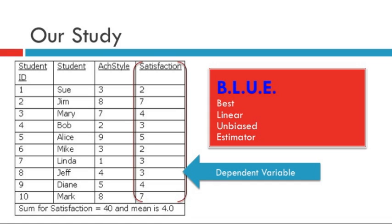So here's my little study. We only have 10 subjects. We'll actually use their names. The dependent measure in the study is student satisfaction. So I have a measure of student satisfaction. And what I'm interested in is, to what degree does achievement style predict student satisfaction? So I'm going to use regression and regress achievement style on satisfaction. You can see here that the sum for satisfaction is 40. That means the mean is 4. A mean is a BLUE, best linear unbiased estimator. And that's a foundational concept in research methods and statistics. So we're going to visit that as well.